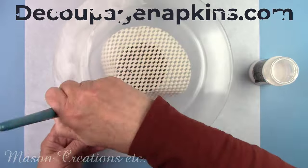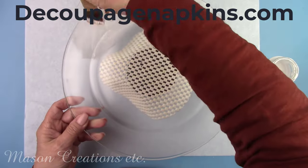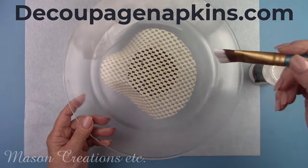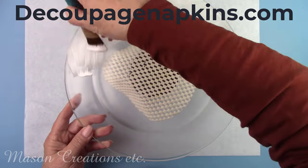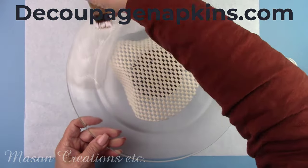DecoupageNapkins.com has such a great selection of rice papers as well as napkins that you can purchase one at a time. Rub on transfers, molds, modeling clay, stencils, stamps, scrapbook paper, and much more. Over 7,000 products.